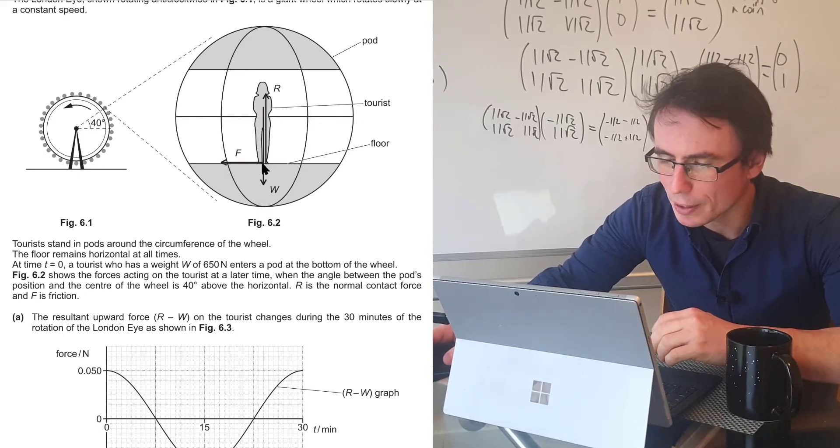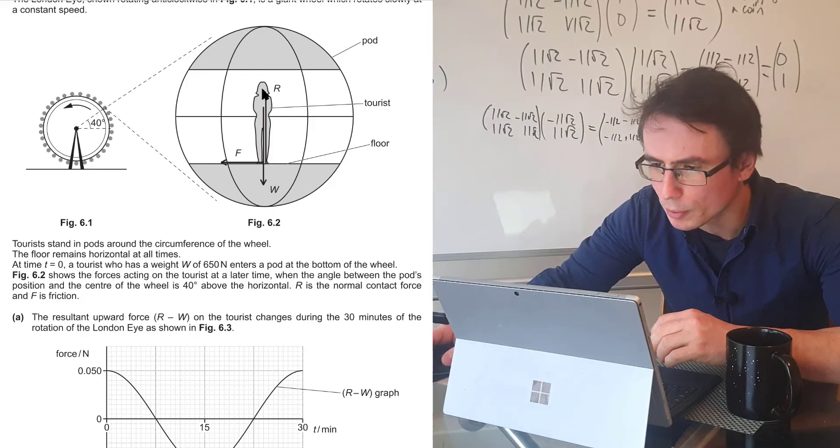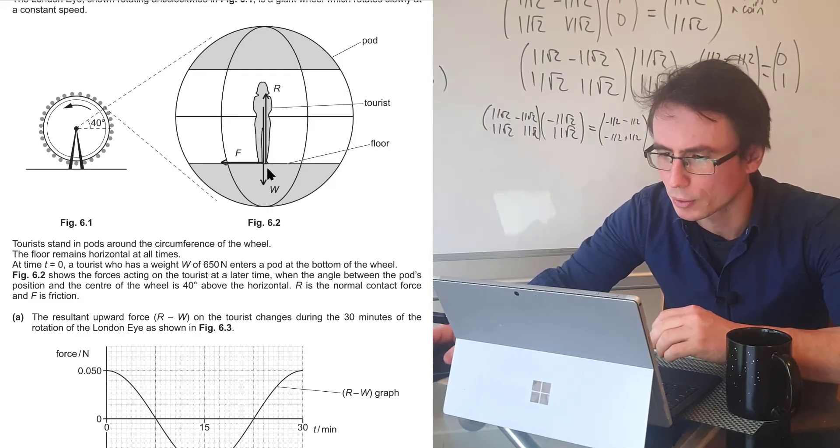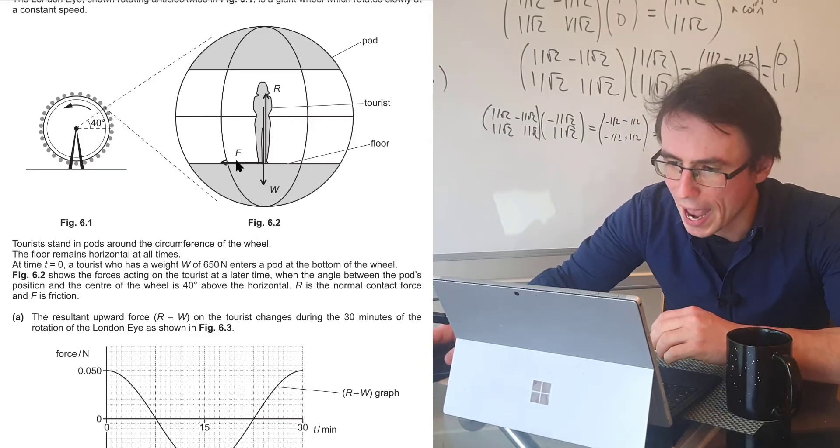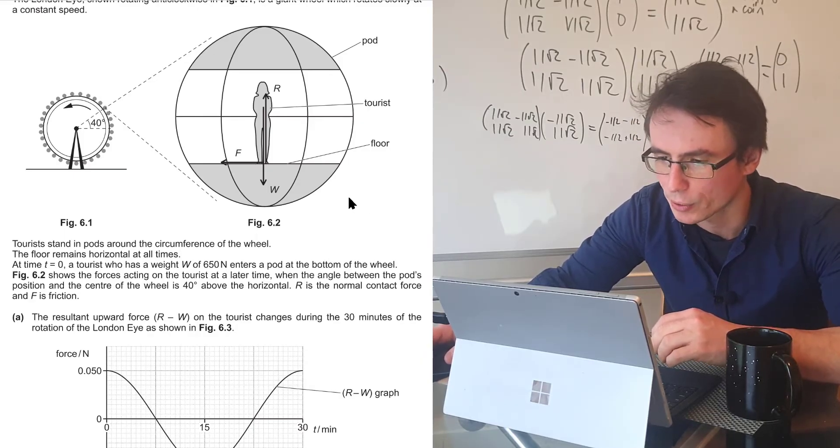So at this position here, we have the weight acting downwards, the normal reaction which is pushing the pod and the tourist upwards, and also we have a force F which is acting horizontally.